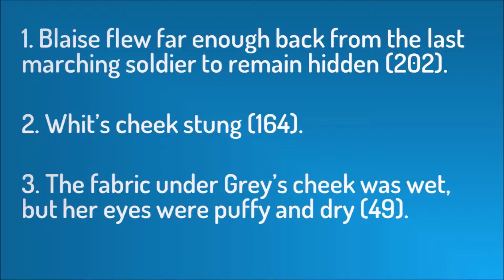An example of this is Curio by Evangeline Denmark. Each time she starts a new chapter from a new character's point of view, she immediately tells the reader whose perspective they're in. Here are first lines from three different chapters: 'Blaise flew far enough back from the last marching soldier to remain hidden.' 'Wit's cheek stung.' 'The fabric under Grey's cheek was wet but her eyes were puffy and dry.' Each line gives the POV character's name immediately and reminds the reader what was happening last time they saw these characters. Beginning each section with the character's name and what happened to them last creates continuity and smoother transitions.